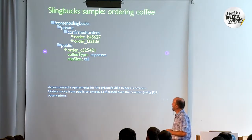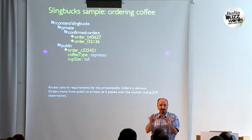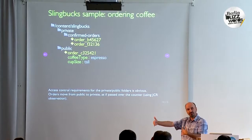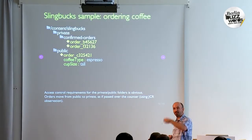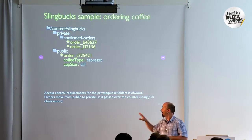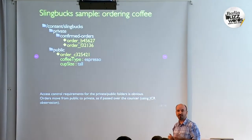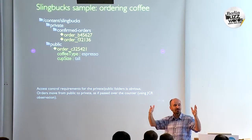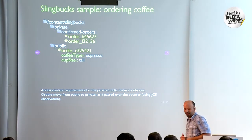This is an example from the Apache Sling project called sling box, which is a coffee ordering system — like a mini Starbucks. You have people ordering coffee and people preparing it on the other side of the counter. The counter here is between the private and public folder. In the public folder, people post orders from a web application. The system watches it based on JCR observation. When an order is approved, it's moved under the private folder, where staff can see and process the orders. Again, clear access control — it's obvious to your admin what the private and public folders mean. It's much easier to understand than a complex graph system.